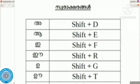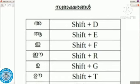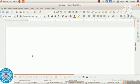In order to type the Malayalam letter 'a', we use the letter D on the keyboard along with the Shift key. So Shift key plus D gives us the Malayalam letter 'a'. Let's see how to type it — press Shift key plus D key.